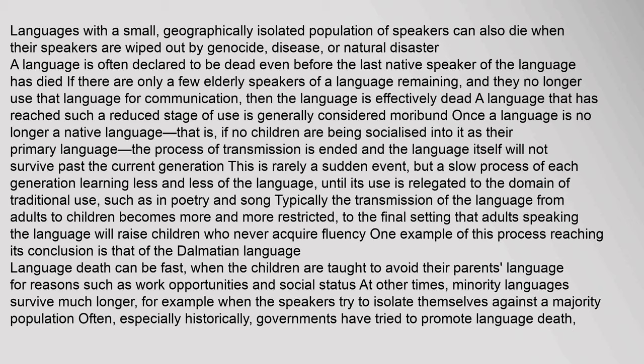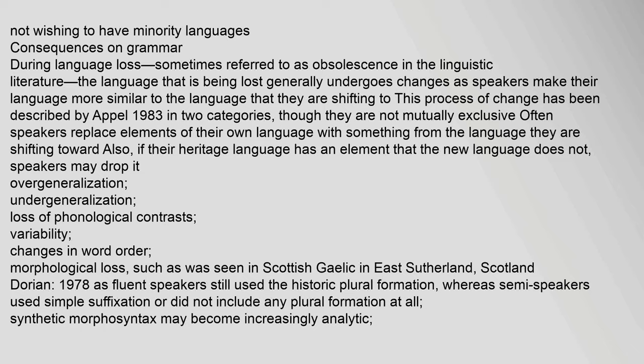This is rarely a sudden event, but a slow process of each generation learning less and less of the language, until its use is relegated to the domain of traditional use, such as in poetry and song. Typically the transmission of the language from adults to children becomes more and more restricted, to the final setting that adults speaking the language will raise children who never acquire fluency. One example of this process reaching its conclusion is that of the Dalmatian language. Language death can be fast when children are taught to avoid their parents' language for reasons such as work opportunities and social status. At other times minority languages survive much longer, for example when the speakers try to isolate themselves against a majority population. Often, especially historically, governments have tried to promote language death, not wishing to have minority languages.